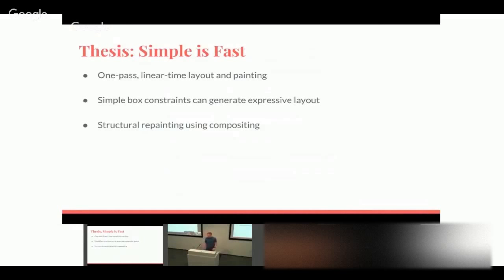We use a very simple constraint model for layout. UIKit has a complicated linear constraint model with a general-purpose constraint solver. Our constraint model is basically a box with a min width, min height, max width, and max height — a domain that's very easy to solve. Our thesis is that this is enough to generate very expressive layouts. We also do all of our repainting structurally — instead of tracking which rectangles on screen are invalid, we do it structurally in the same tree structure, saying 'this subtree needs to be repainted.' That's a very big performance win, taking advantage of hardware compositing on modern mobile devices.